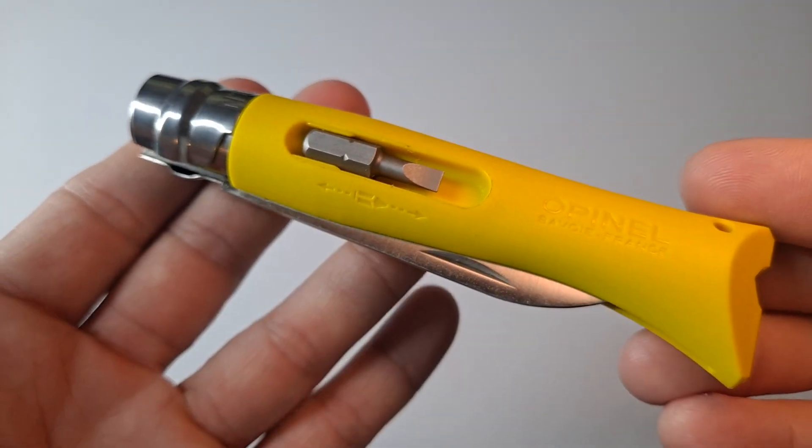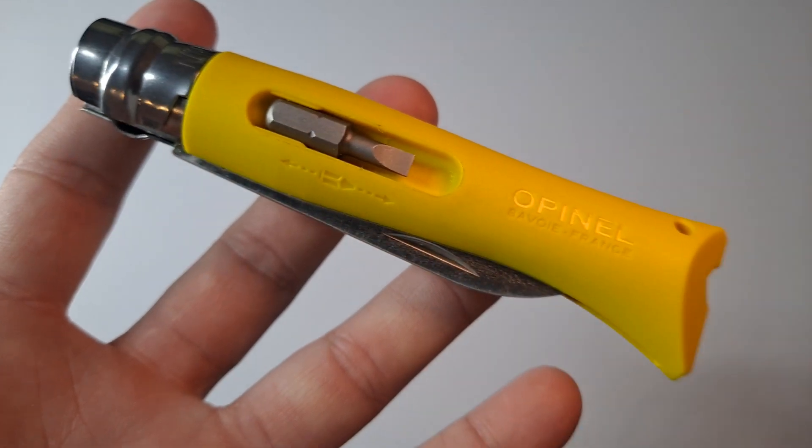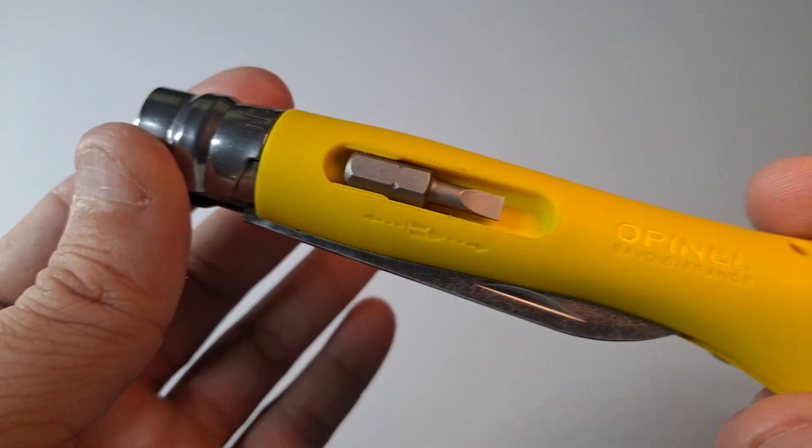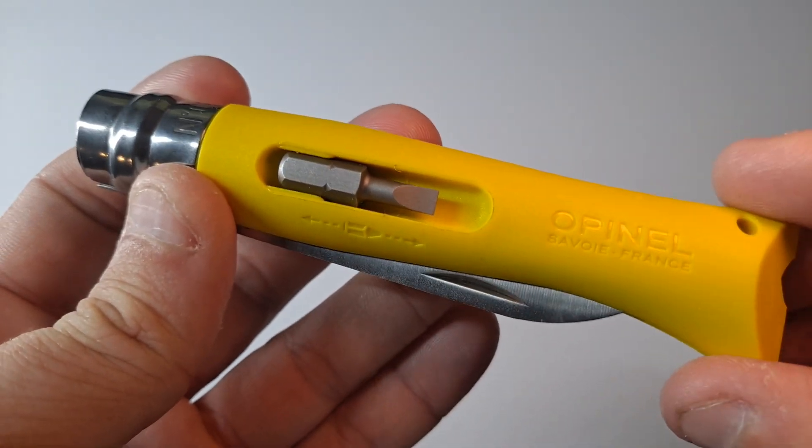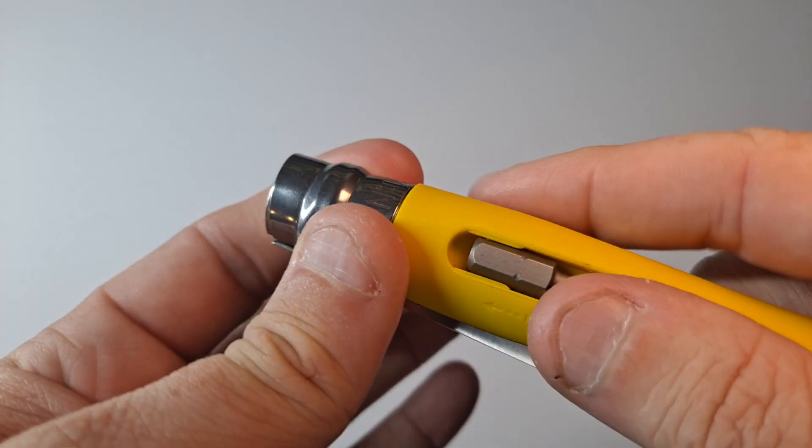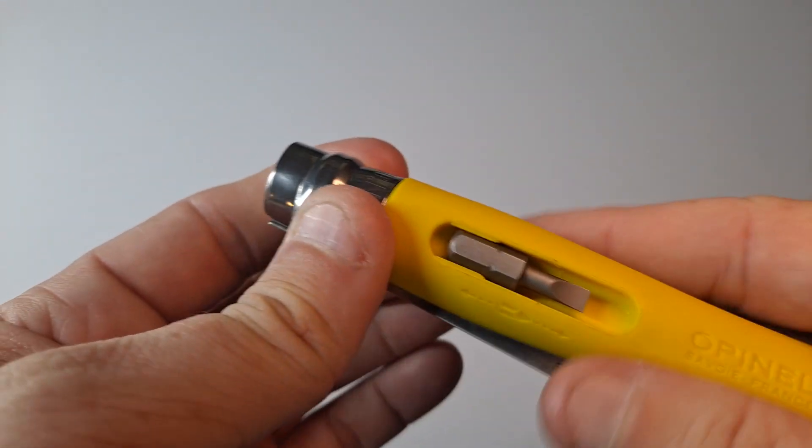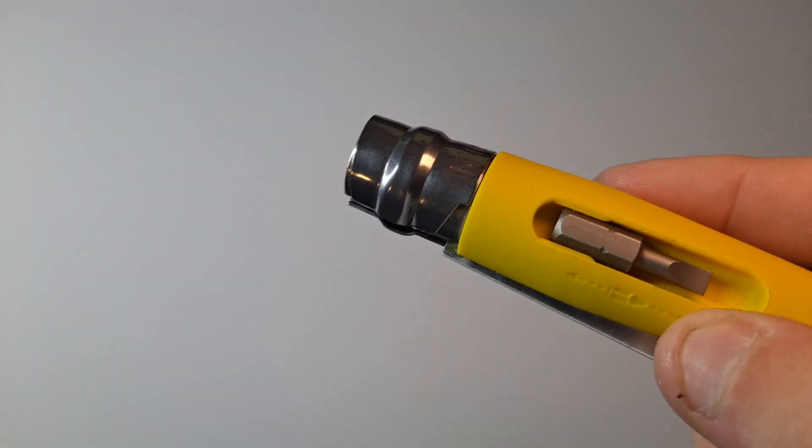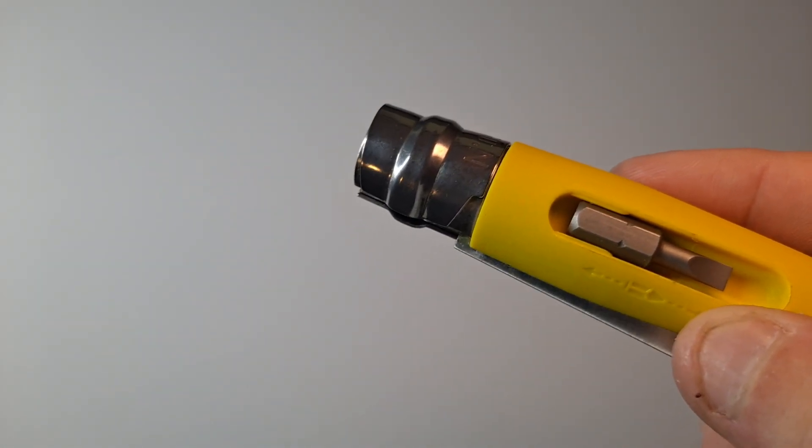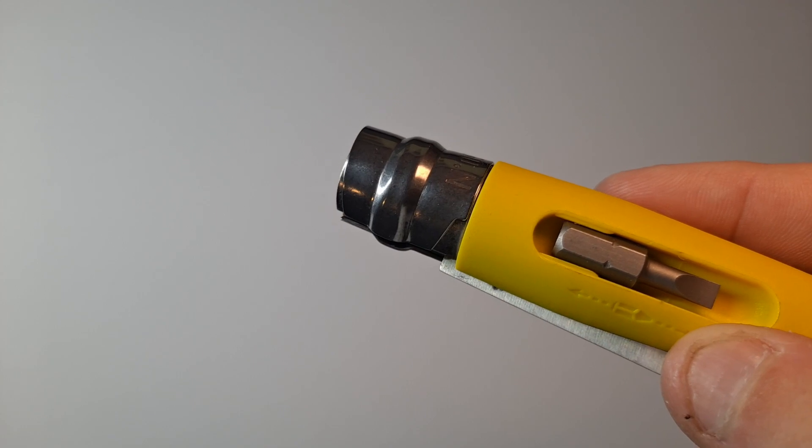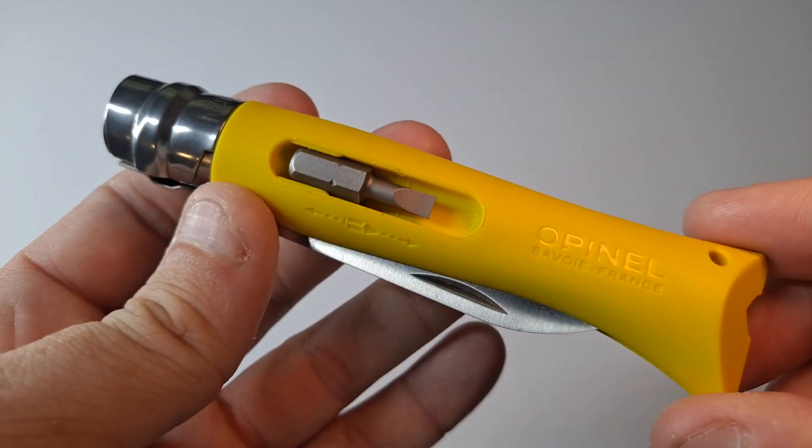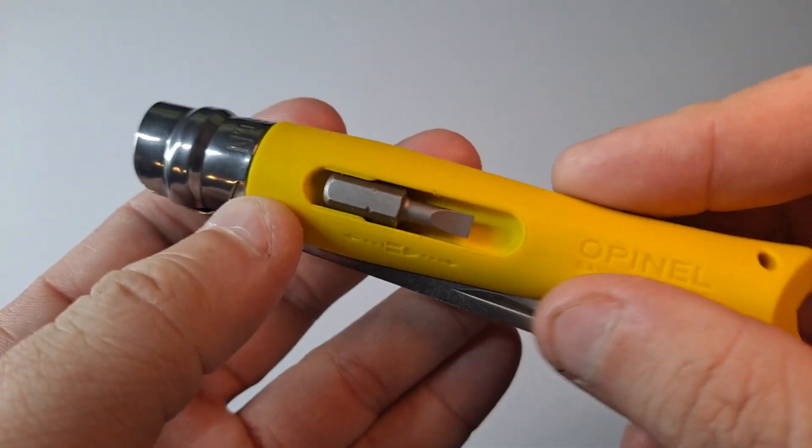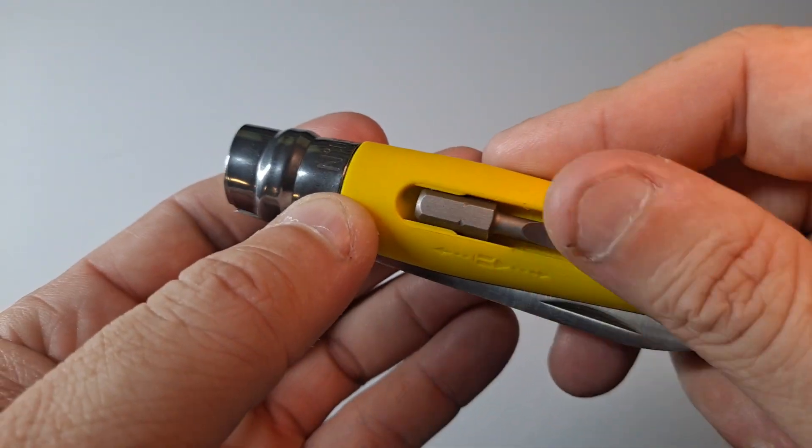This is the Opinel Number 9. Opinel has been on my channel before. The company is made in France. This is a fiber-reinforced plastic handle, so in wet weather conditions, if your hands are sweaty, say if it's 95 degrees in North Carolina and the landlord won't turn the air conditioning on, your hands don't slip on this.